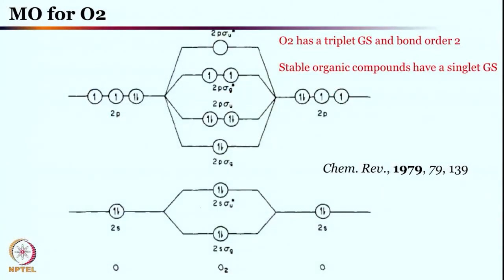Before that, let us discuss the molecular orbital diagram of oxygen. As you have noticed, it has 2 unpaired electrons at the anti-bonding orbital — this is the triplet ground state, with a bond order of 2. There are 6 electrons minus these 2 electrons, that is 4 electrons divided by 2, giving bond order 2. Most organic compounds have a singlet ground state, yet oxygen with its triplet ground state is so important, and because of its triplet ground state a lot of reactions can be operated while reacting with the metal center.